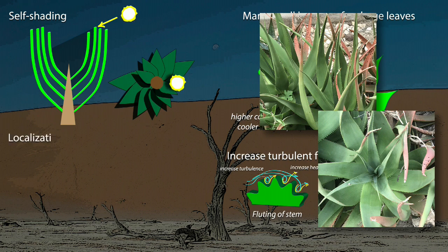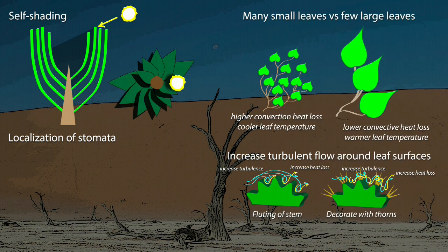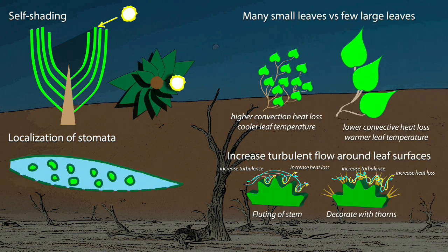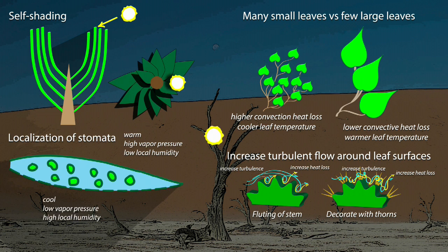Arranging the stomata so they only open on the shady parts of the leaves is another strategy. The leaves of many desert-adapted plants only have stomata on their lower surfaces. The sun shining on a leaf will typically warm the leaf's upper surface more than the shaded surface. If stomata are only on the leaf's shaded surface, evaporation will take place only through the leaf's cooler surface, which keeps water loss rates low.